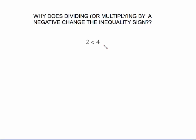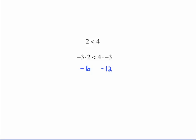Why does dividing or multiplying by a negative change the sign? Take 2 less than 4 and divide both sides by negative 2: 2 divided by negative 2 is negative 1, and 4 divided by negative 2 is negative 2. Is negative 1 still less than negative 2? No — on the number line, the number further right is greater, so negative 1 is greater than negative 2. Dividing by the negative changed the inequality sign. The same is true for multiplying: take 2 less than 4, multiply both sides by negative 3. Negative 6 is not less than negative 12 — negative 6 is greater than negative 12.